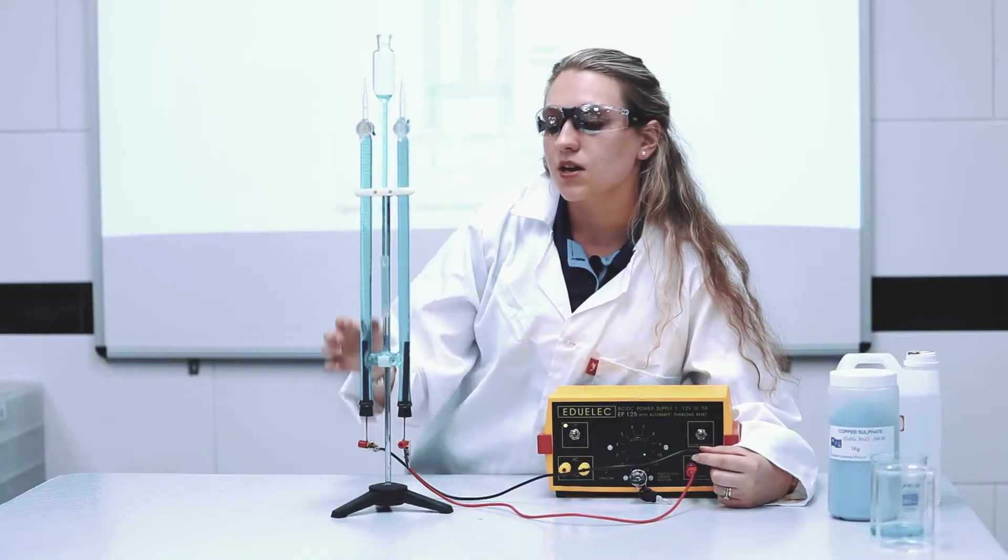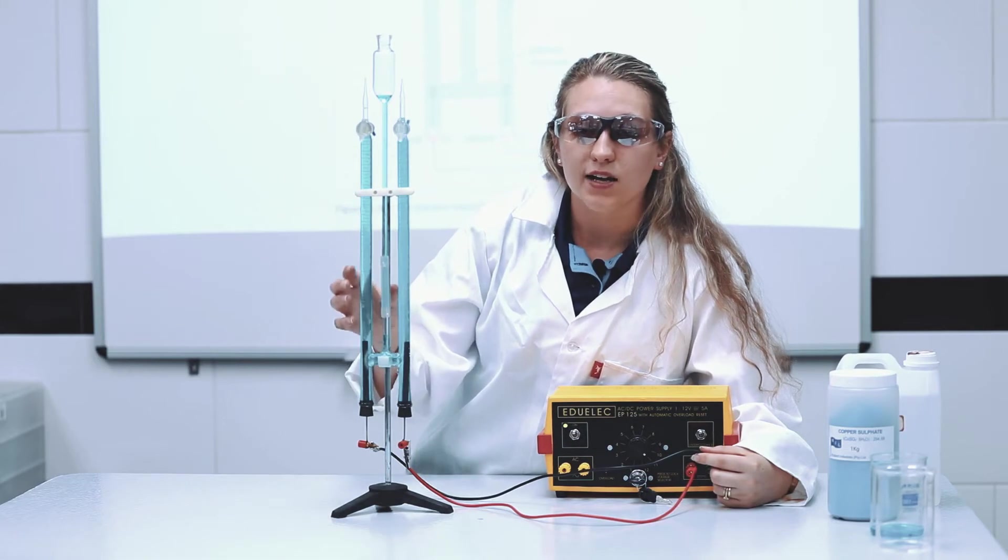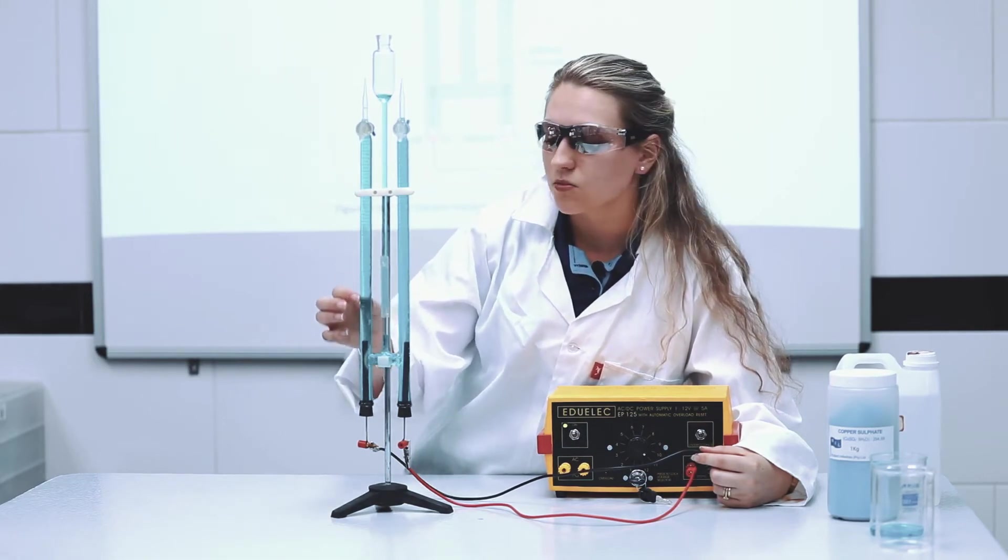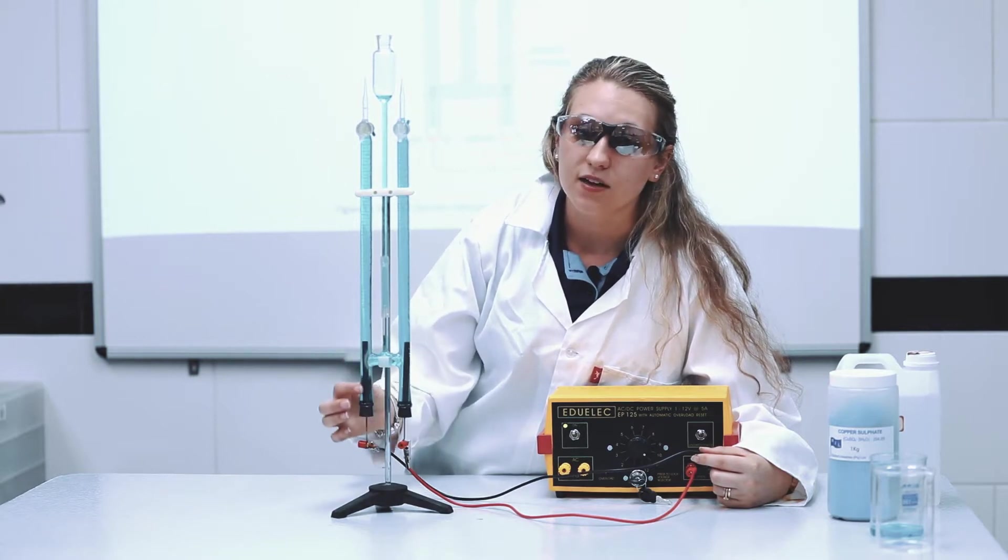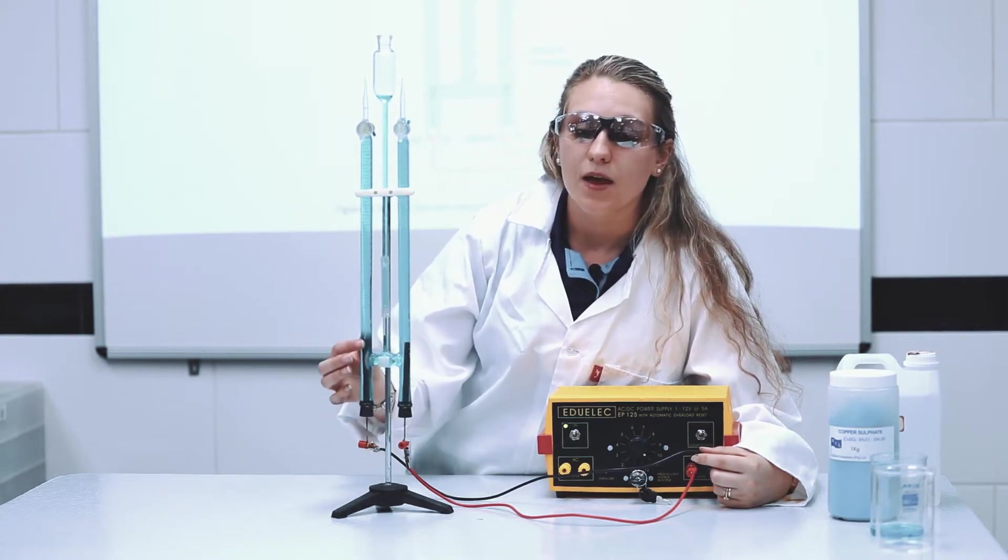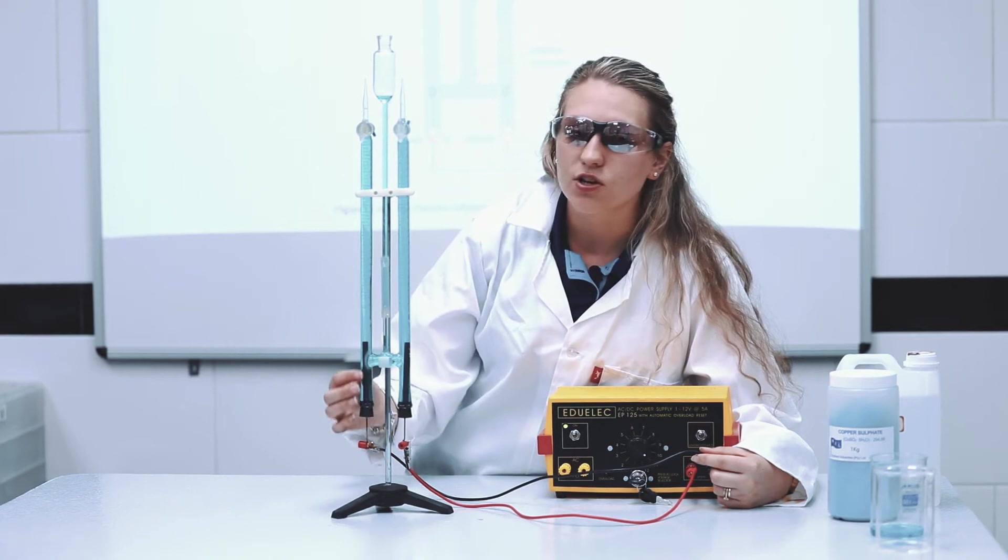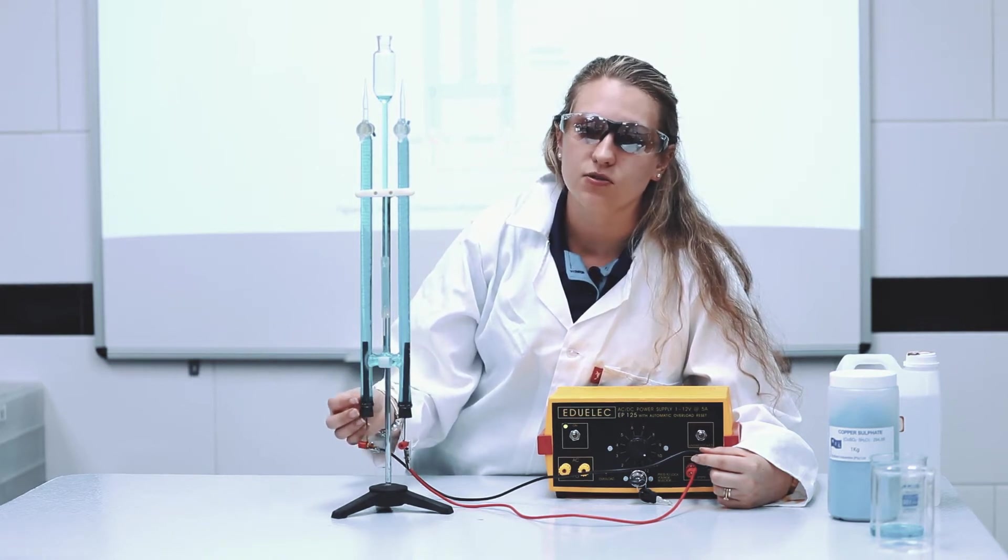Your negative terminal is going to be connected to your negative electrode, which is your cathode. Remember in copper sulphate solution, your copper ions, which is your cations, is going to move towards the cathode. So what do we expect to form here? We expect to form copper, solid copper to precipitate onto your electrode.